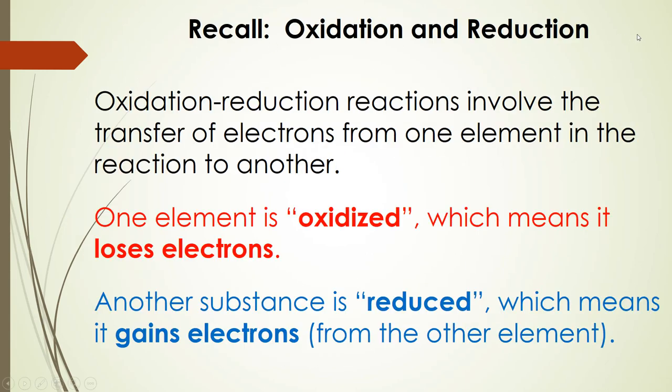Now I want you to recall from chapter four oxidation and reduction. These reactions involve the transfer of electrons from one element in the reaction to another and they always go together. So something's always going to be oxidized and something's always going to be reduced. One element is oxidized and when that happens it means it loses electrons.